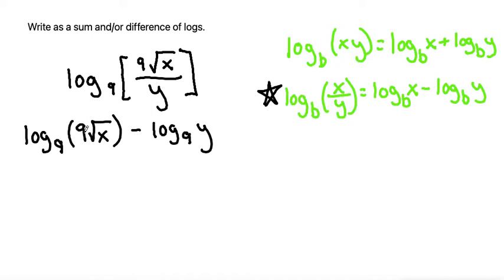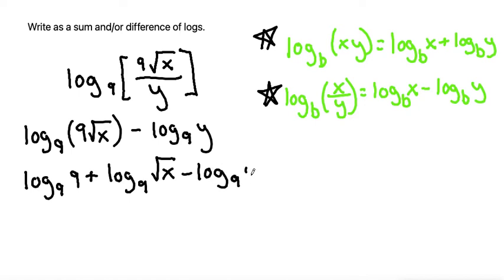The next step that I'll take is, since we still have two things that are multiplied in this log, I'll use this formula next to separate this into separate logs. So this will be log base nine of the first thing, which is nine, and then because they're multiplied, it's plus log base nine of the second thing, which is square root of x. And then I'll bring down the minus log base nine of y. Okay, so that's my second step.